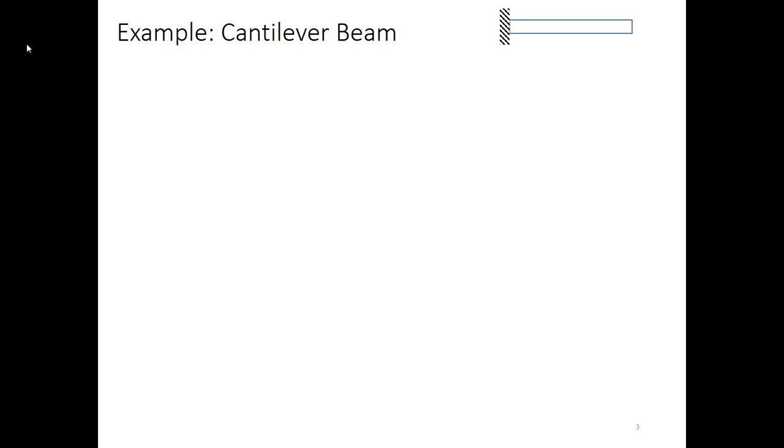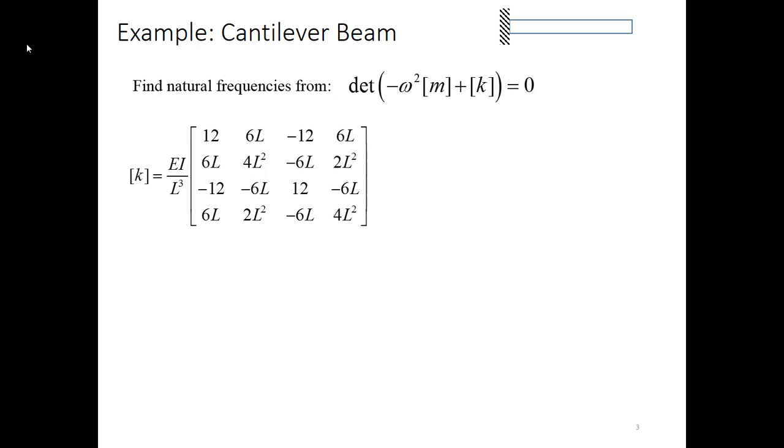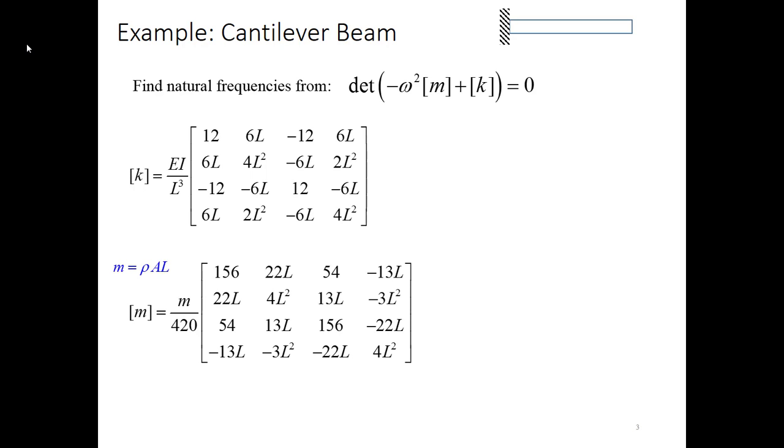Let's see how this works with a cantilever beam. We're going to be looking for the natural frequencies by solving this equation for omega. So we need to find m and k. So first off, k from prior videos, we derived this for a simple beam, a beam that only has transverse displacement and slope degrees of freedom, no axial degree of freedom. The mass matrix was derived in the prior video, and here I've substituted in total mass of the cantilever beam for rho Al.